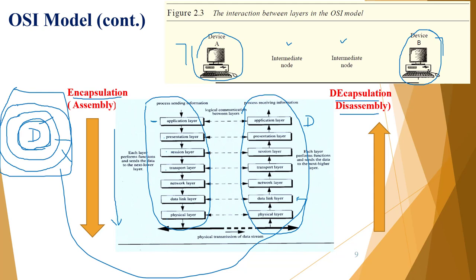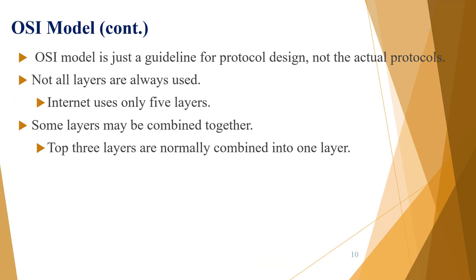The OSI model is just guidance for protocol and network design — it is not the actual protocol. It is very flexible: you can use all seven layers or merge some layers together. For example, you can combine layers 7 and 6 if needed. The TCP/IP model follows this approach by merging some OSI layers, reducing from seven to four or five layers.